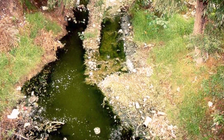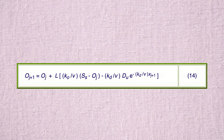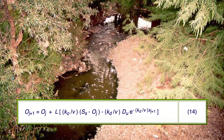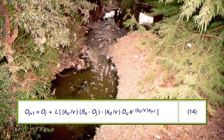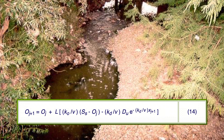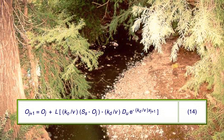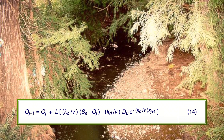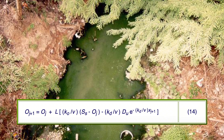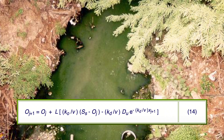The dissolved oxygen concentration at node J plus 1 is calculated using the following input parameters: Q sub E in cubic meters per second, S sub S in milligrams per liter, O sub S in milligrams per liter, D sub E in milligrams per liter, V in meters per day, L in meters, K sub D in days to the minus 1, and K sub O in days to the minus 1. The dissolved oxygen concentration along the stream — the DO-SAG curve — may be calculated using equation 14.